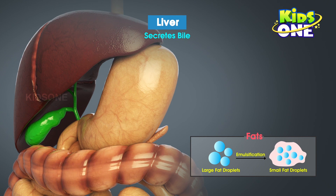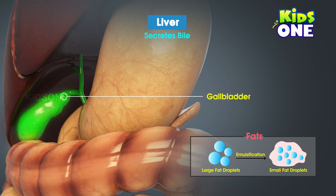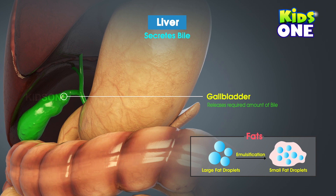Bile is stored and released by the gallbladder. The gallbladder is a small structure situated near the liver — it acts like the personal assistant of the liver. The gallbladder takes up the responsibility of releasing and controlling the amount of bile as and when required. Emulsification of fats marks the completion of the breakdown of macronutrients in the food.